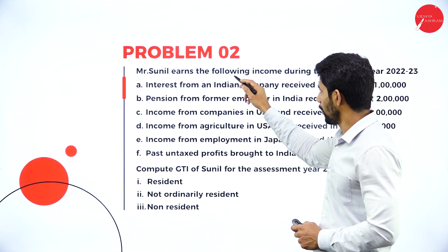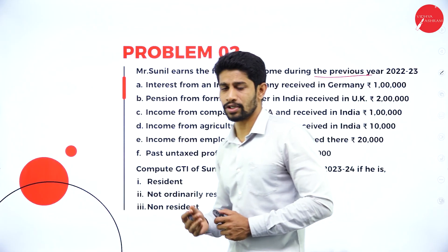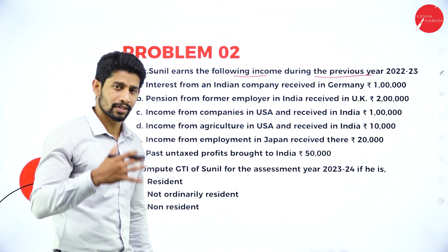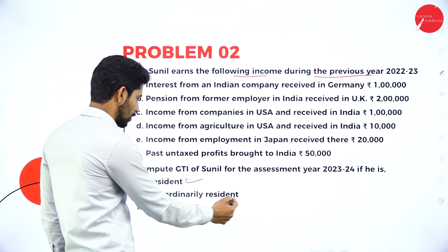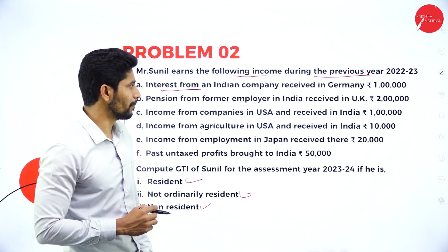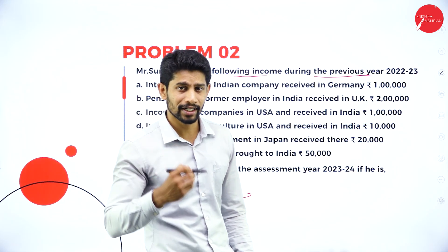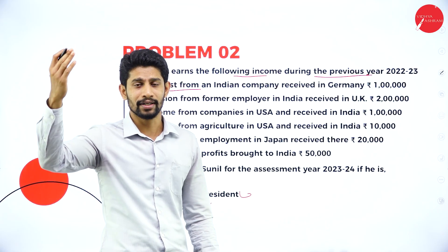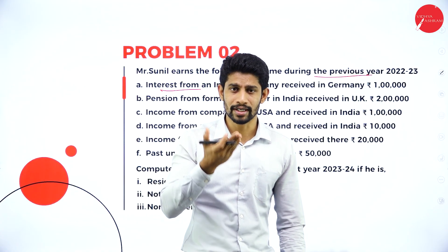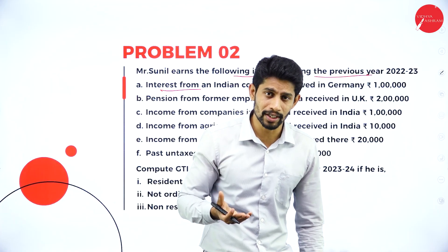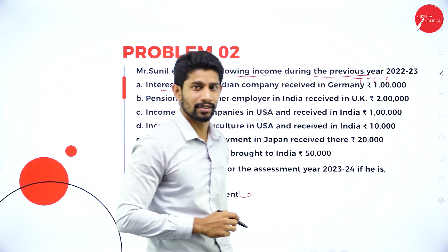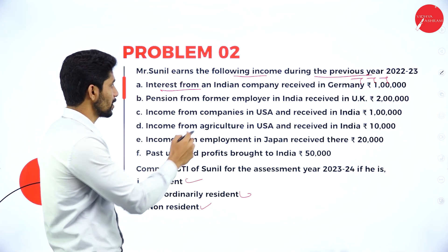From this, you are supposed to find the gross total income under resident, not ordinary resident, and non-resident heads. First point: interest from an Indian company received in Germany. The income is generated in India. Any income accrued, arisen, or generated in India — or received in India — the tax incidence is taxable, taxable, taxable, because it is Indian income. Where it is received does not matter.